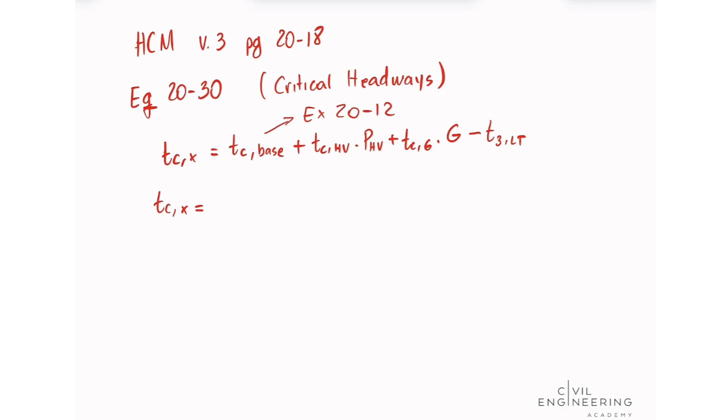This is going to be 6.9 plus our adjustment factor for heavy vehicles. This is 2 for a major street with 2 or 3 lanes in each direction. In this case, we have 2 lanes in each direction, so we're going to put 2 here, times the proportion of heavy vehicles expressed as decimals. We have 4% of heavy vehicles.